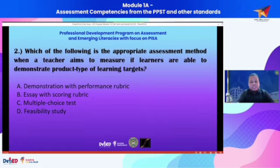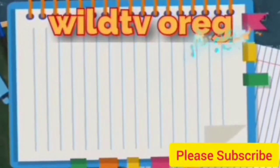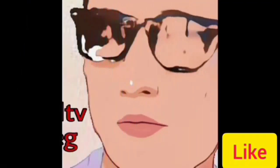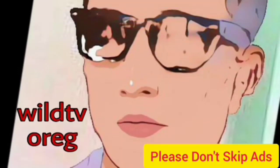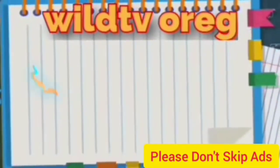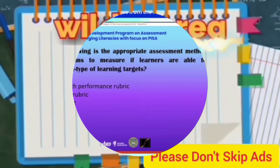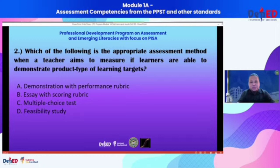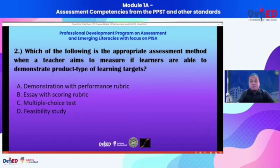Item number two. Which of the following methods, when used in assessments, measures if learners are able to demonstrate product type of learning targets? Option A: demonstration with performance rubric. Option B: essay with scoring rubric. Option C: multiple choice tests. And option D: feasibility study.